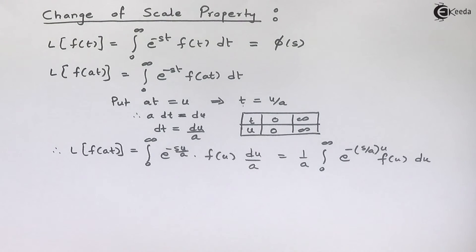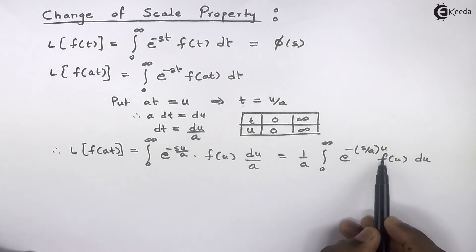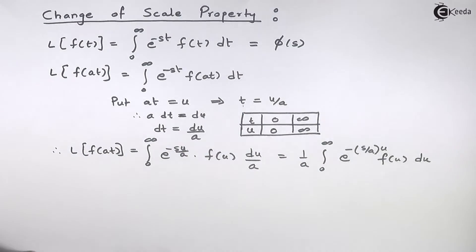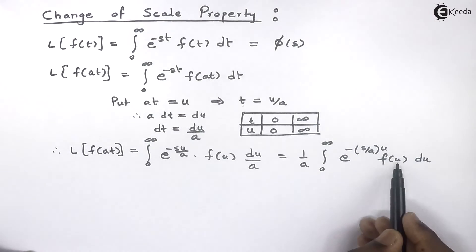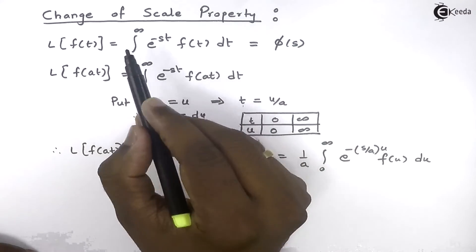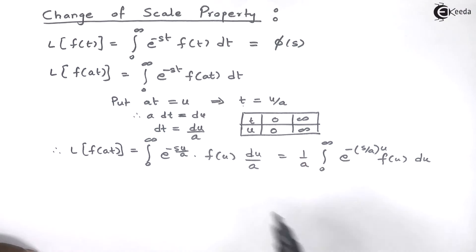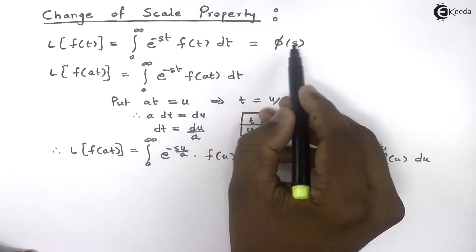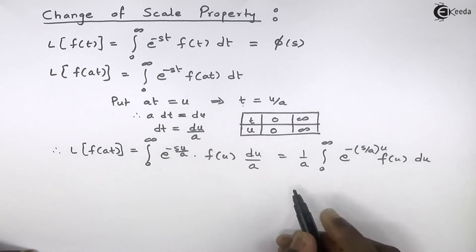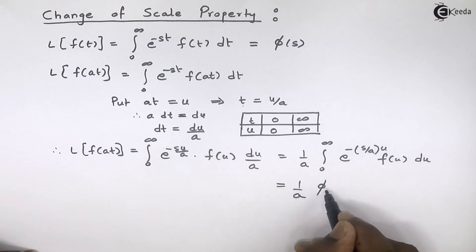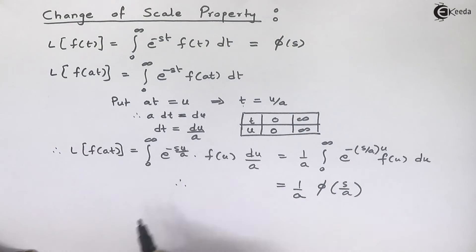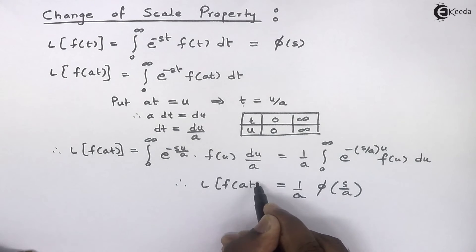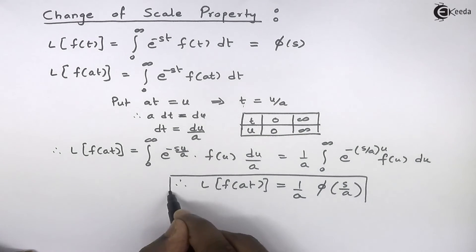To evaluate this integration we compare it with the definition. The definition is in terms of t, while this integration is in terms of u, but instead of f(t) we have f(u) and instead of dt we have du — these are just dummy variables. Here the constant playing the role of s is s upon a. Since the answer of the definition is phi of s, with constant s upon a the answer becomes phi of s by a. Therefore the formula for the Laplace transform of f(at) is 1 upon a times phi of s upon a.